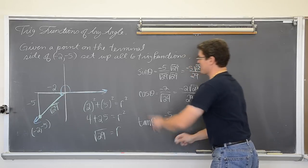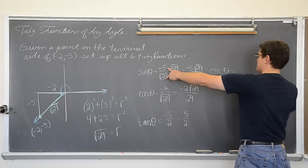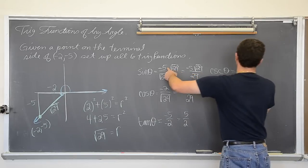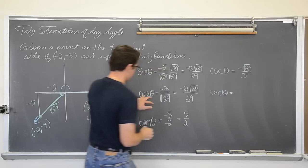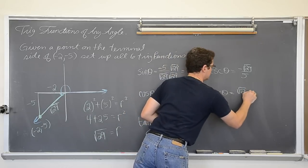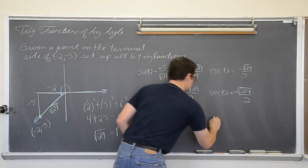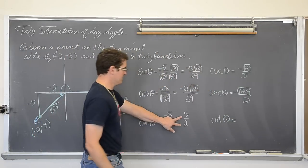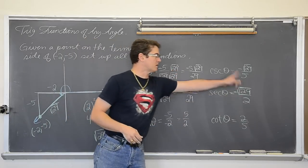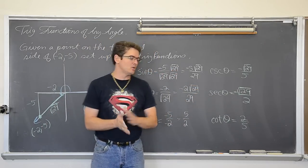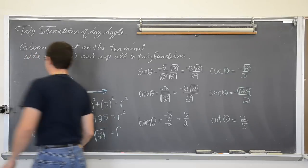The tangent of theta is y over x, so it will be negative five over negative two, or five halves. The reciprocal of sine is cosecant, so cosecant of theta is the value flipped: negative square root of 29 over five — we won't have to rationalize that. The reciprocal of cosine is secant, and flipped that's negative square root of 29 over two, still negative because we're in quadrant three. And cotangent is two-fifths. So we have evaluated all six trig functions in exact form — without ever actually knowing what the rotation of theta is.